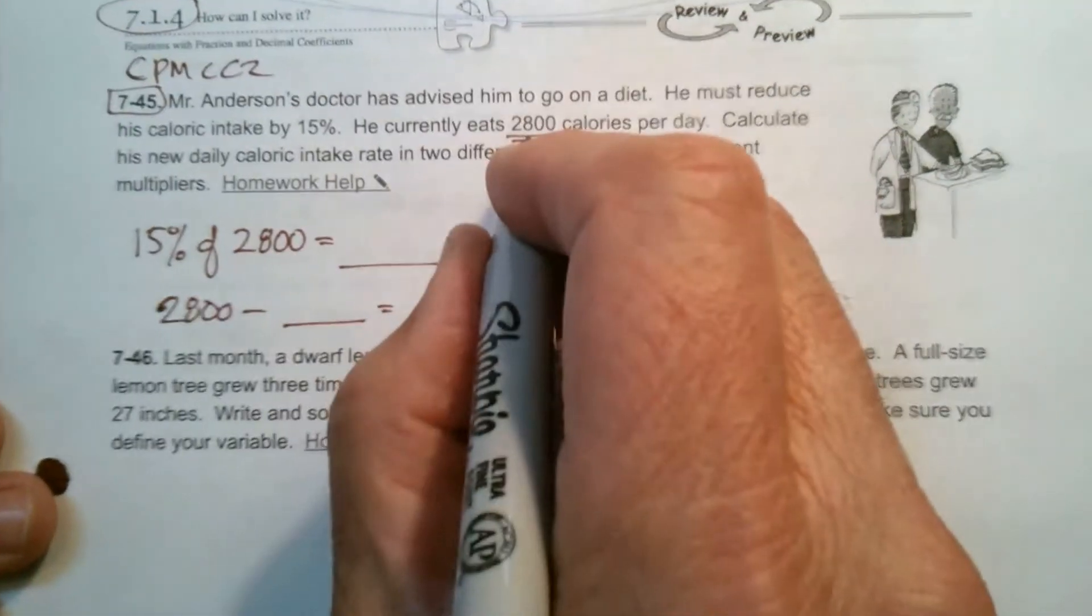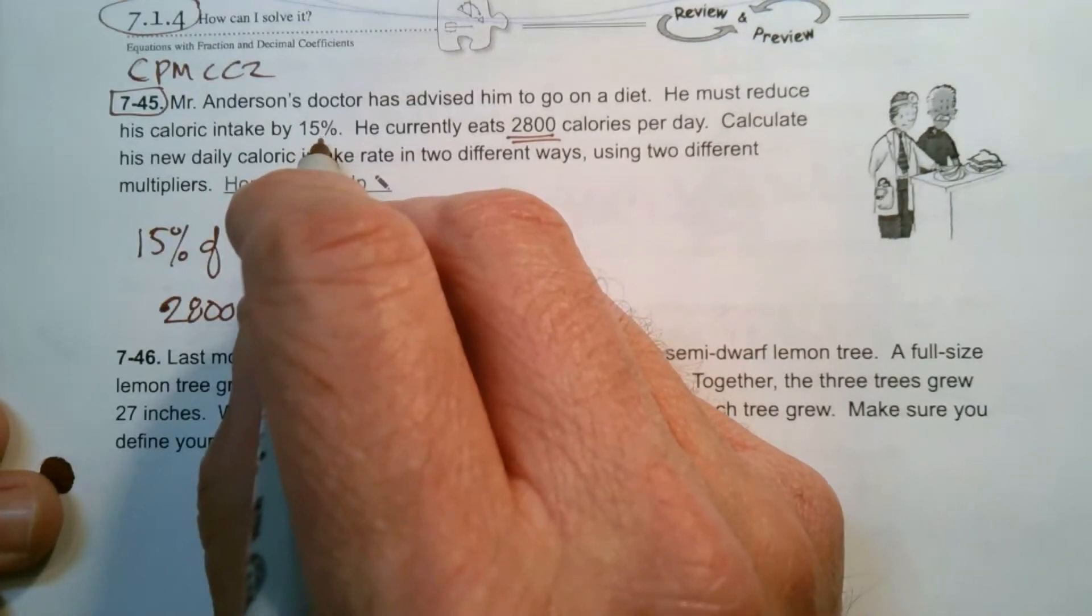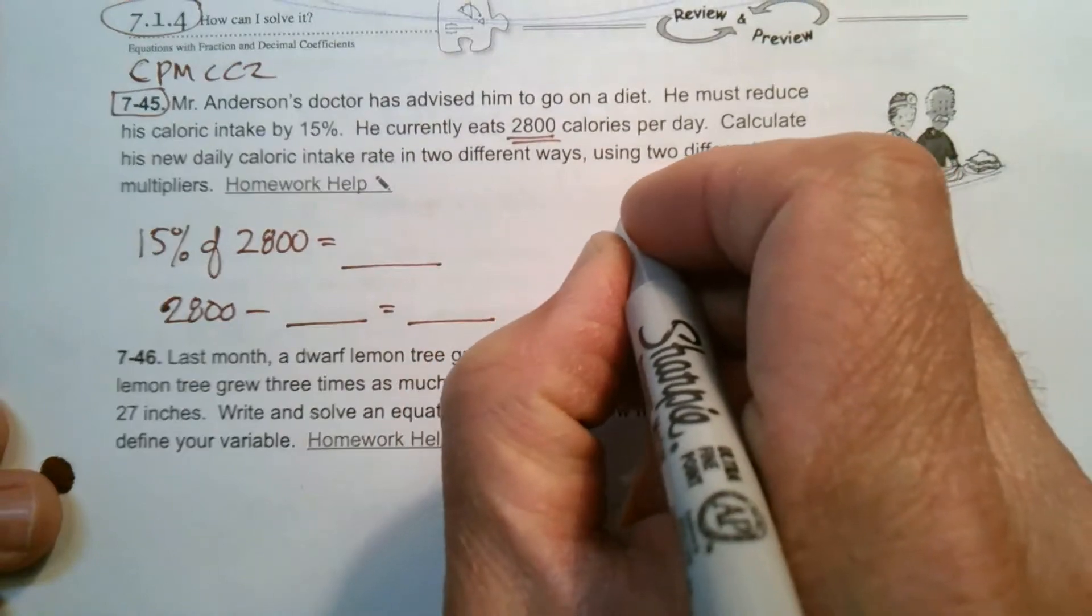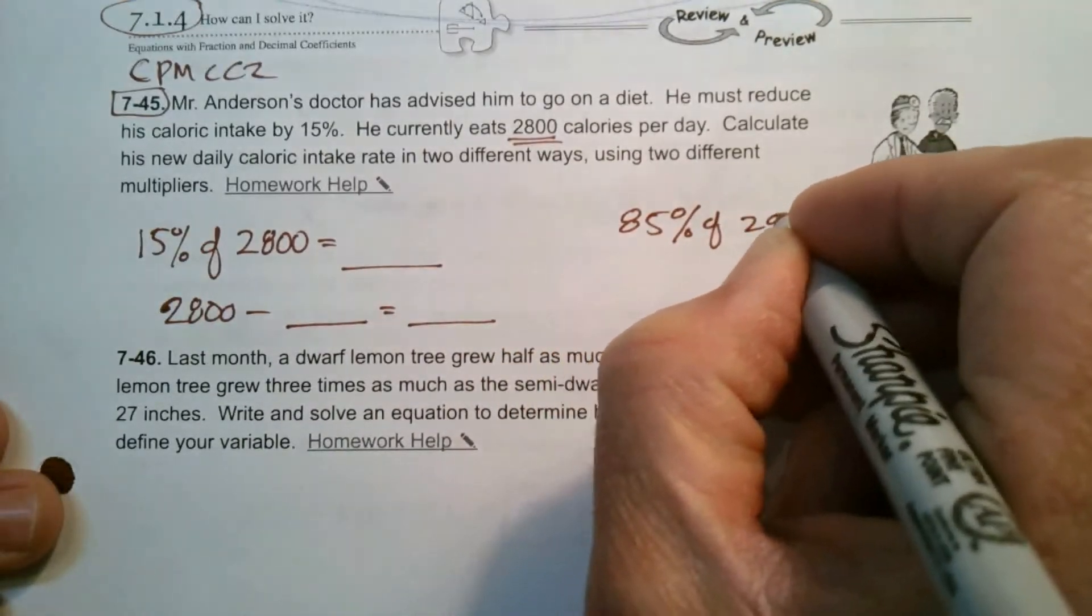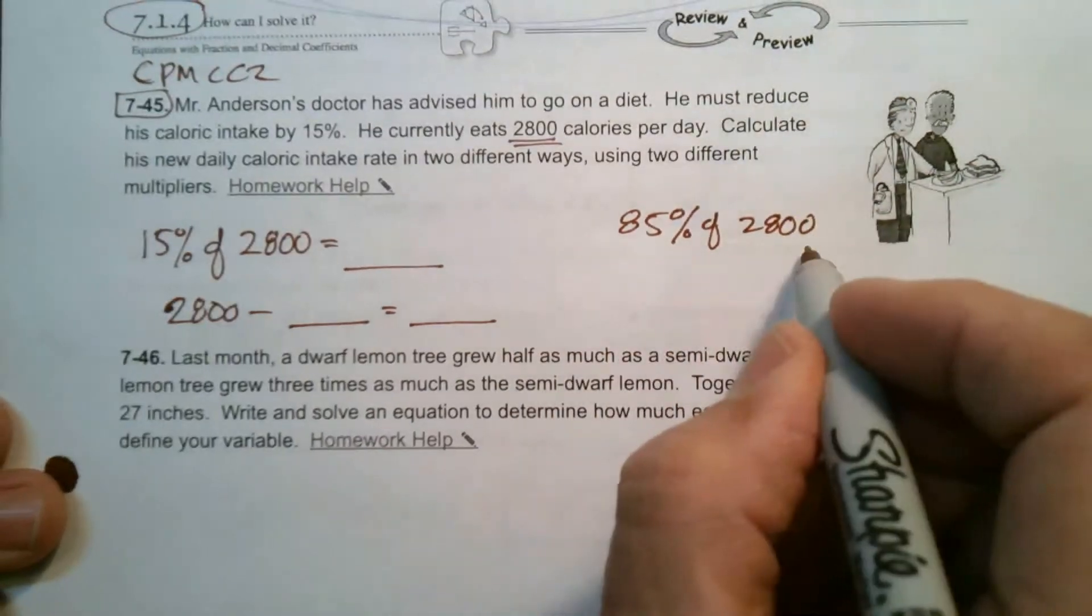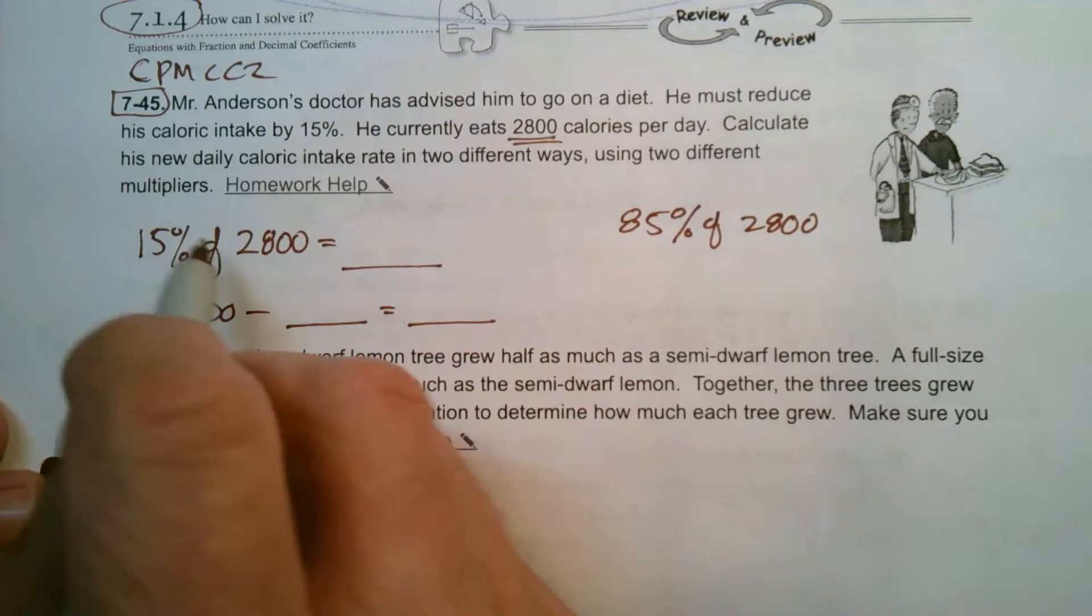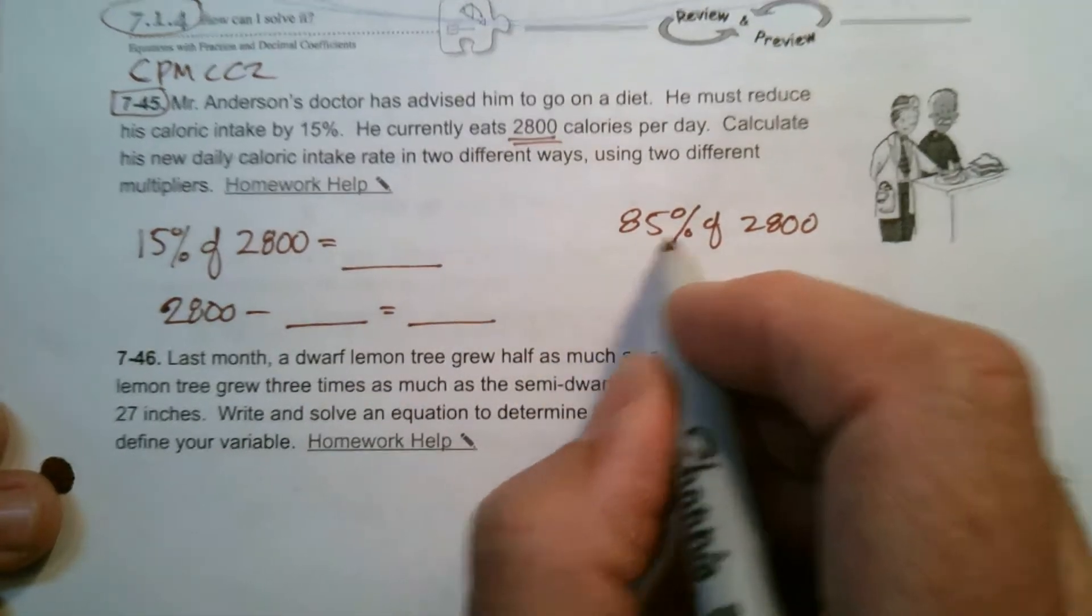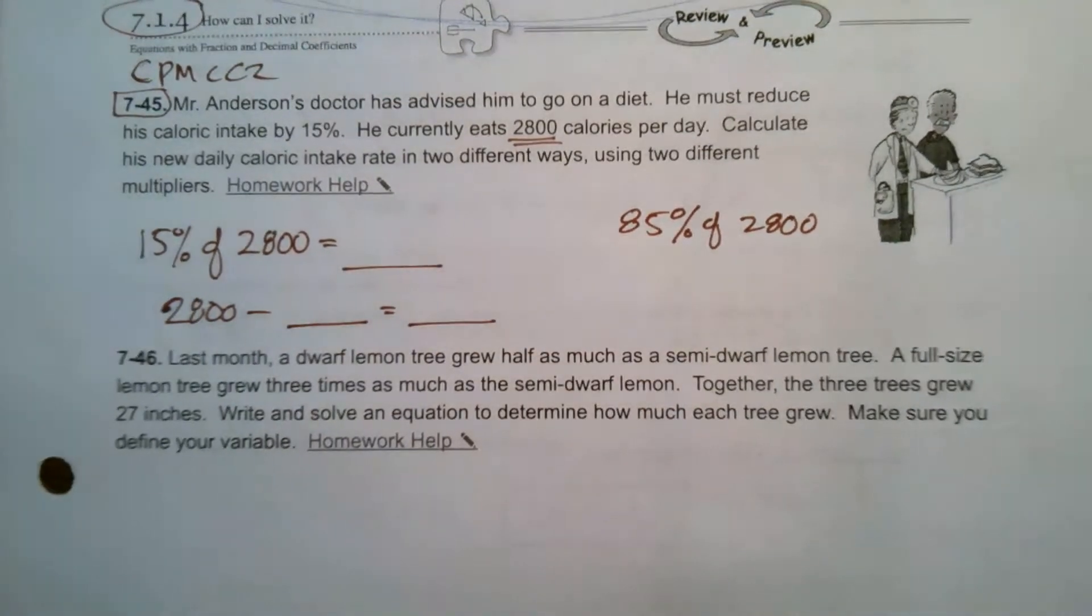The other way is if we already know that he needs to reduce it by 15%, then he needs to only take in 85% of this amount. And if I do 85% of this amount, that's actually going to get me right to my answer. Instead of having to do 15%, then subtract and get the answer, I can just do 85% and get the answer right off there. So I'm going to do both ways so we can see that.